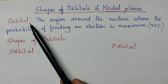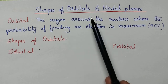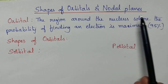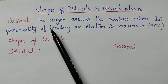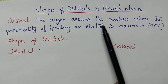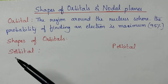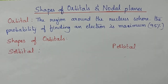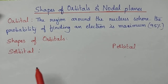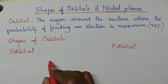Coming to the orbital, it is the region around the nucleus where the probability of finding an electron is maximum. In the case of S orbital, the probability of finding an electron is maximum in all directions, so S orbital is having spherical shape.